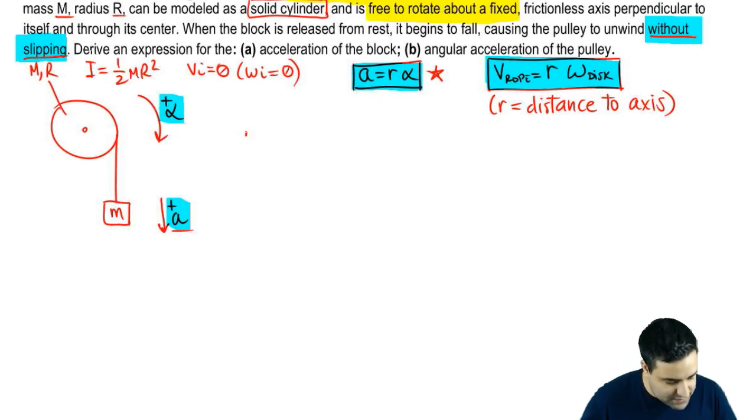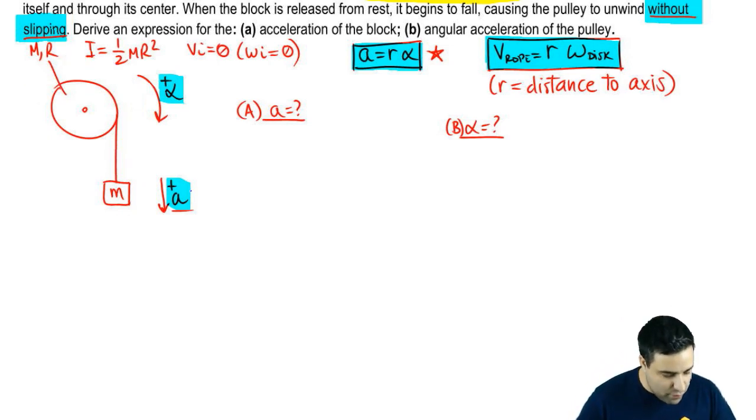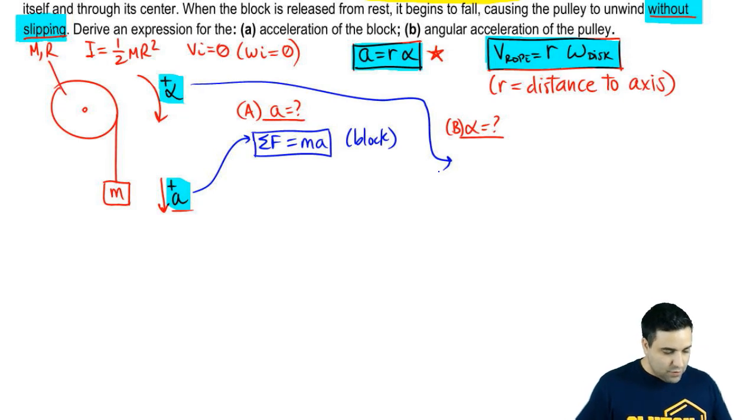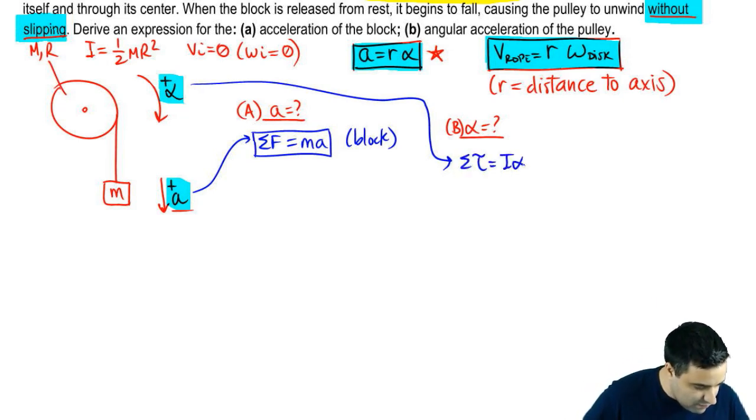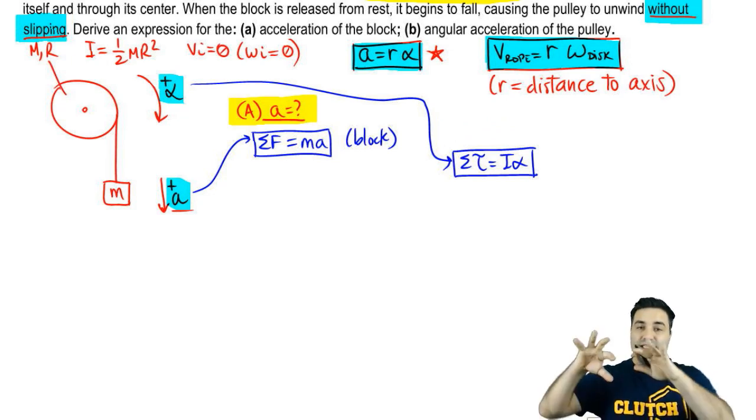So how do we solve this? We're looking for both accelerations here, A and alpha. First thing we have to do is figure out how many types of motion we have and then which equations and how many equations we're going to start with. This object has one motion, which is a linear motion, so it has linear acceleration. And this object has one motion as well, which is a rotation, so it has a rotational acceleration. Because I have one a, I'm going to write sum of all forces equals ma, and this is for the block. And because I have one alpha, I'm going to write sum of all torques equals I alpha. By the way, this is just a process to find A. We'll talk about alpha at the end. So we're first looking for A. We have these two equations, and what we're going to do now is expand these two equations as much as possible.